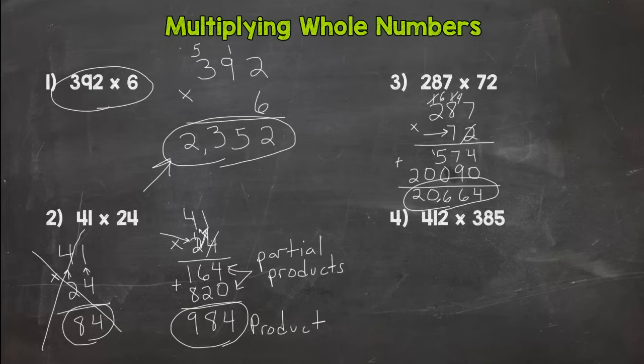Next we have a 3 by 3. We're going to need a little more room here. 412 times 385. So let's start off by taking the 5 to everything. 5 times 2 is 10, 5 times 1 is 5 plus 1 is 6, 5 times 4 is 20. So we're done with the 5, done with that 1 up there.